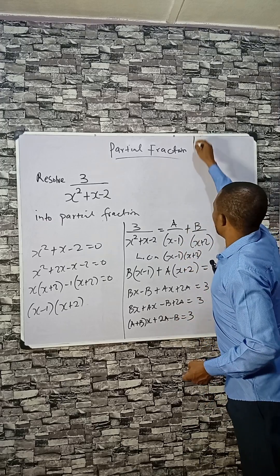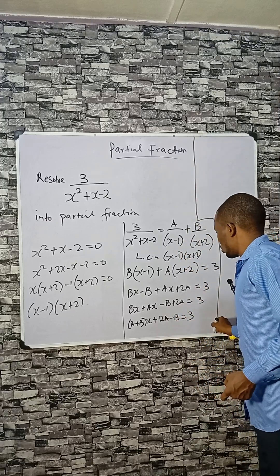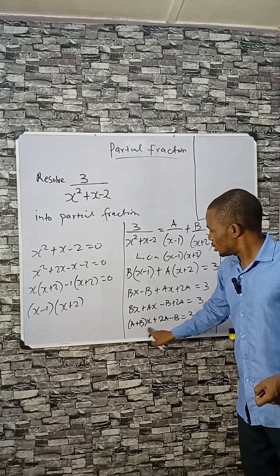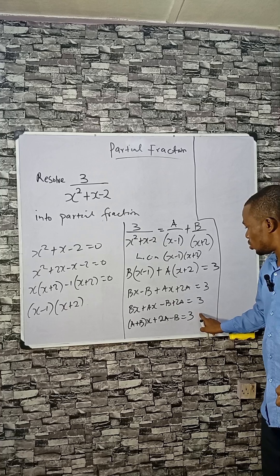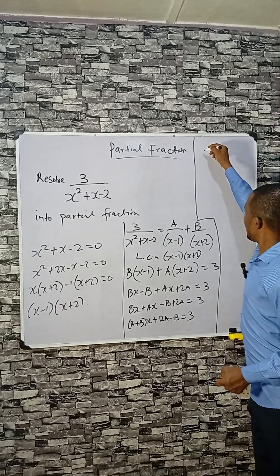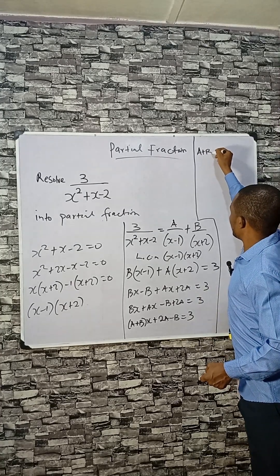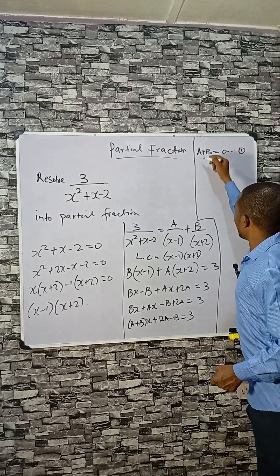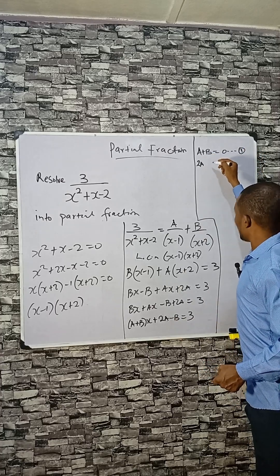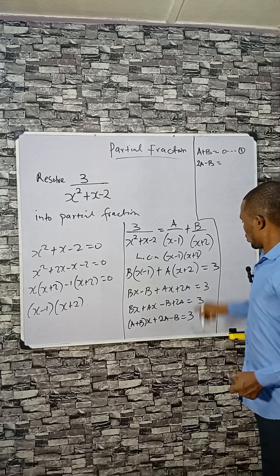We have to compare coefficients here. If we check what is standing in front of x, it's A plus B, but there is none here, so A plus B equals 0. That's equation 1. And 2A minus B equals to 3, that's equation 2.